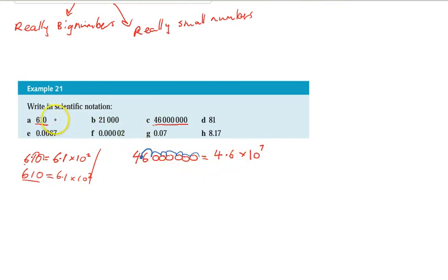Now I said that we can use it for really big numbers. Obviously 610 wasn't very big but it's a good start. 46 million that's a bigger number so we can use it for that. We can use it for much bigger numbers as well. We can also use it for very very small numbers.